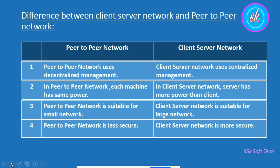The fourth comparison point is that peer-to-peer network is less secure. Special security is not present in peer-to-peer network because each machine acts as a server as well as a client, and each computer has to maintain its own user accounts and other security settings. So security is very less in peer-to-peer network. On the other side, the client-server network is more secure because all the resources are present on the server machine, so the server provides more security.